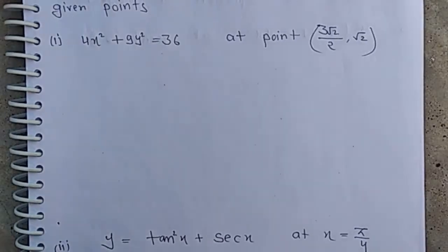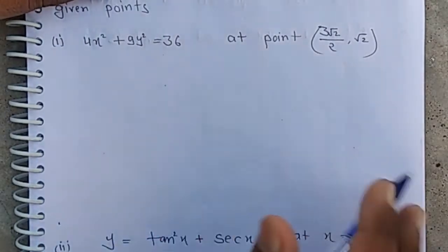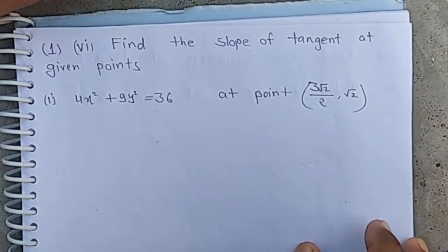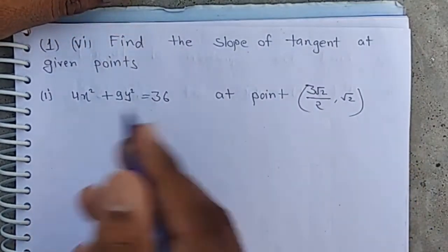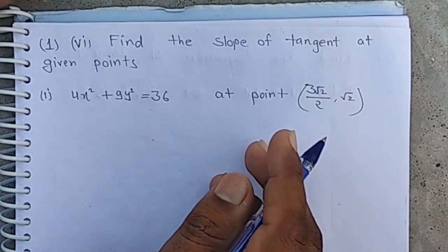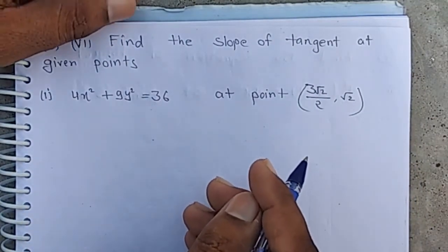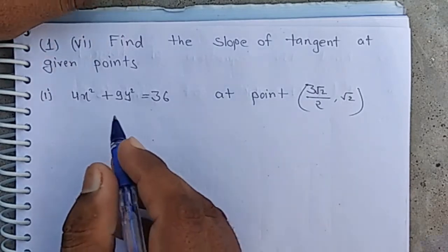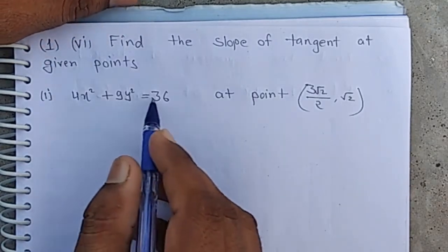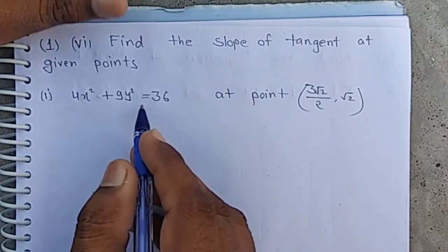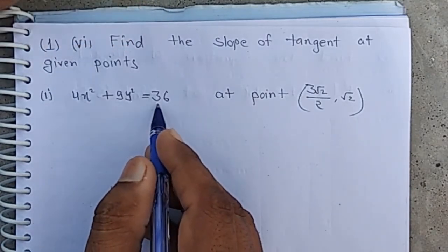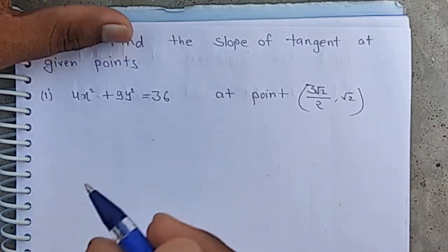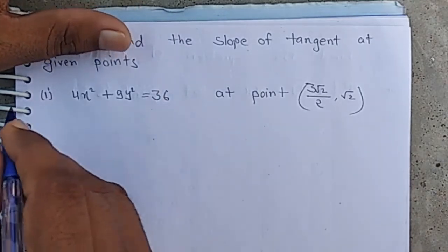The question is to find the slope of the tangent at a given point. We know that the slope of the tangent is given by dy/dx at point (x1, y1). First, we differentiate the given equation with respect to x.